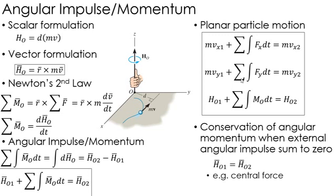And of course, if there are no external angular impulses, or a better way of saying it is those angular impulses summed to zero, then angular momentum is conserved. That is, the initial angular momentum equals the final angular momentum.